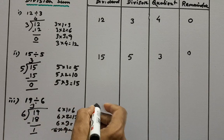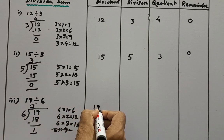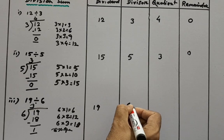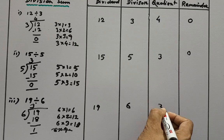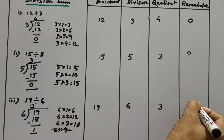So here dividend is 19, divisor is 6, quotient that means result is 3 and remainder is 1.